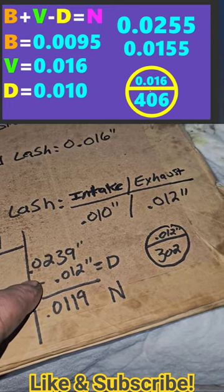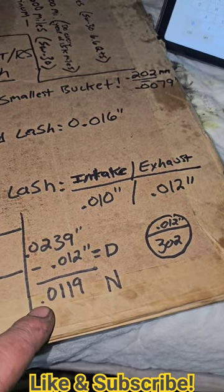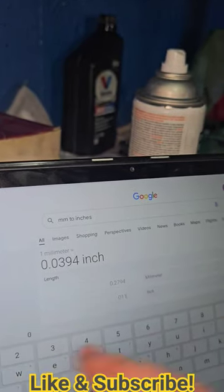Minus your 0.0239 to 12 thousandths and your nominal number is 0.0119.